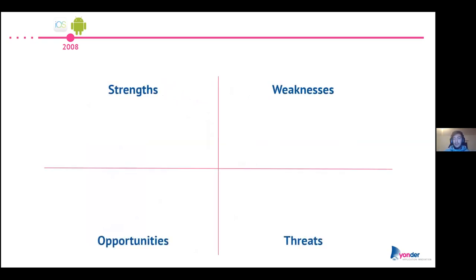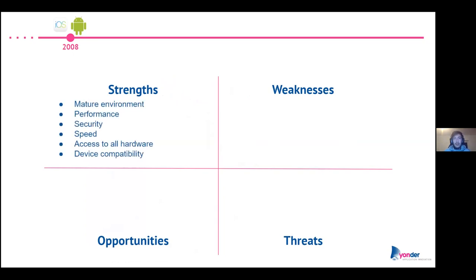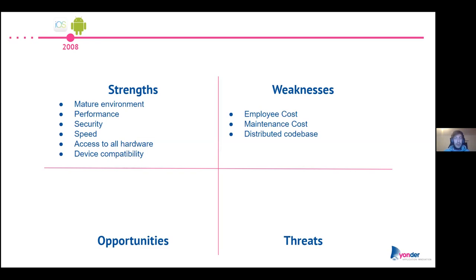For each technology, we'll analyze key points using a SWOT analysis. What do native technologies have as a strength? It's really obvious — they're really fast, they're mature, this is the pioneer that started everything. You're going to have really fast performance, you have access to all the hardware, and you have great device compatibility. For weakness, in order to obtain all this performance, you will have a higher cost: higher employee cost, higher maintenance cost, because you'll have a distributed code base — one for iOS and one for Android, which is double the effort.